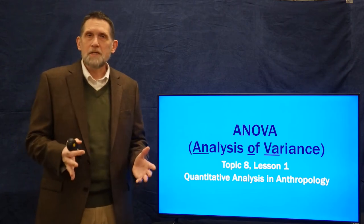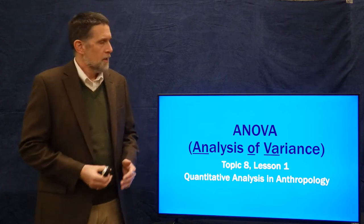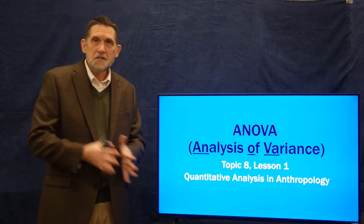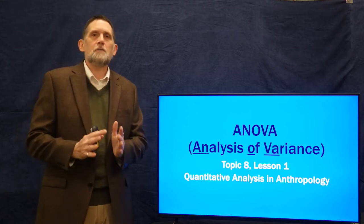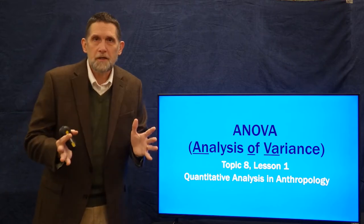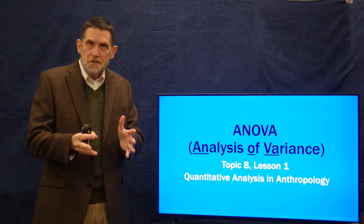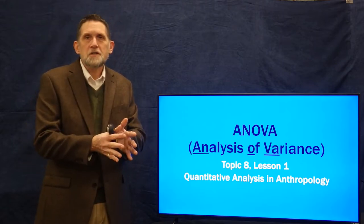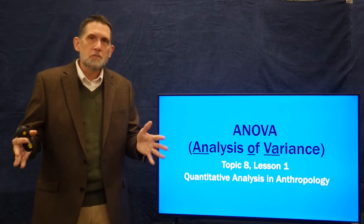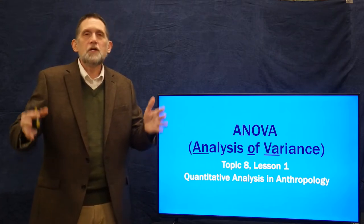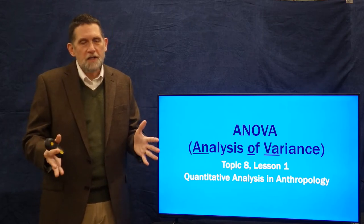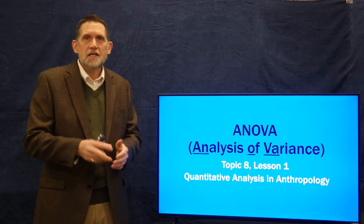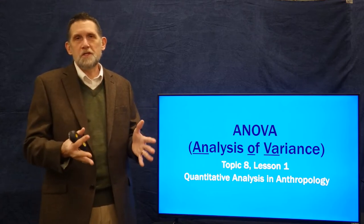The approach I'm going to be taking to ANOVA is to talk about it in terms of T-test and Z-test. I want you to think about ANOVA conceptually as a T-test where you have more than two groups. If you have two groups, you have a T-test. If you have more than two groups that you're comparing, then you have an ANOVA. And in fact, the results of an ANOVA and a T-test, if you only have two groups, are going to be essentially the same.